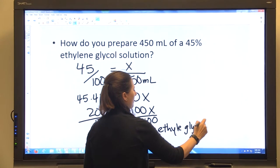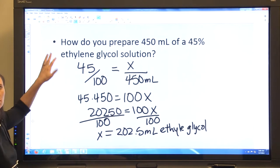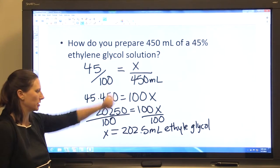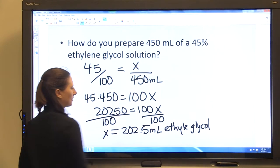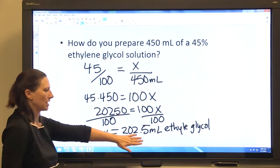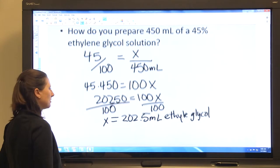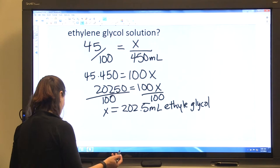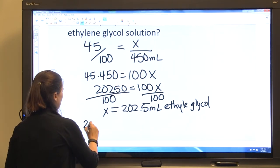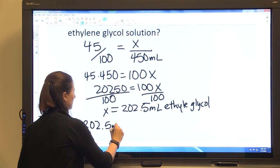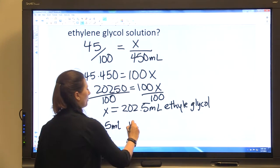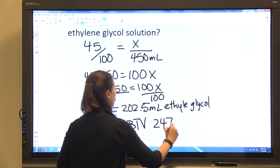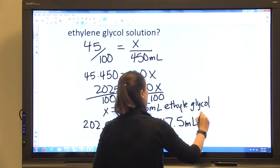But this is not the end of the problem. You need to know how to prepare the solution. So you know that 45% of the 450 mLs is ethylene glycol, that's 202 mLs of ethylene glycol. But the rest is water. So to get to 450 you're going to say that you need to add 202.5 mLs of ethylene glycol and bring to volume with 247.5 mLs of water.